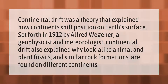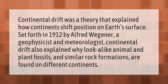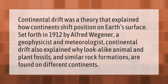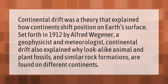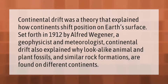Continental drift was a theory that explained how continents shift position on Earth's surface. Set forth in 1912 by Alfred Wegener, a geophysicist and meteorologist, continental drift also explained why look-alike animal and plant fossils and similar rock formations are found on different continents.